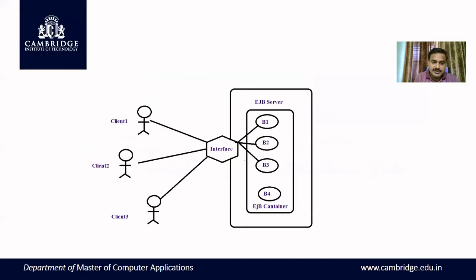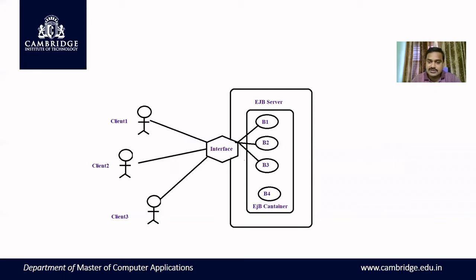For example, observe this figure — we have clients: client one, client two, client three. In any EJB program, you write your EJB programs in the EJB server, which is called the application server. All the beans are stored in the EJB container. Inside the EJB server you have the EJB container, and inside the EJB container you have a bean pool storing all the beans.